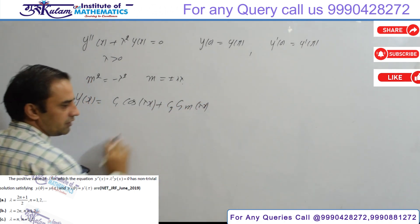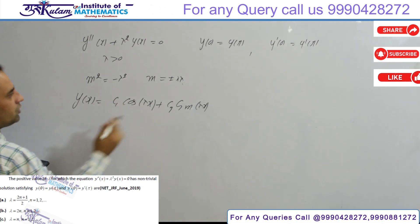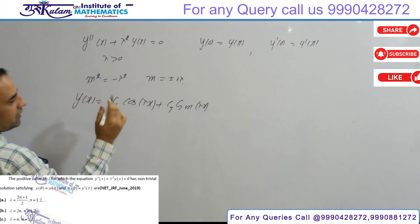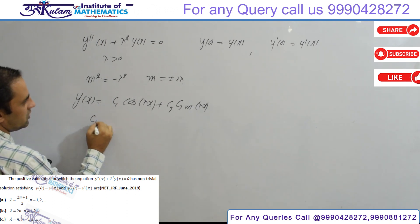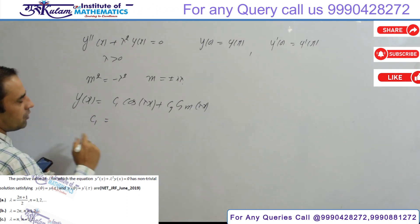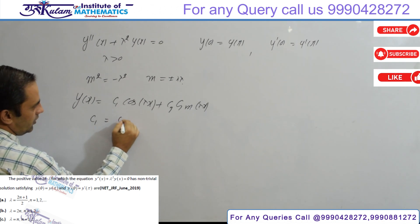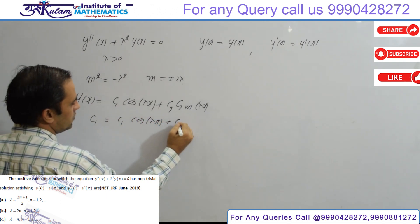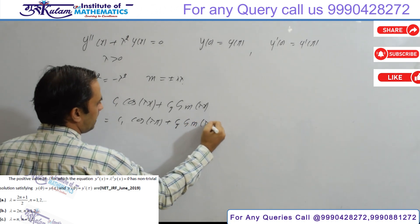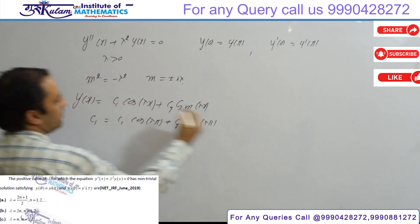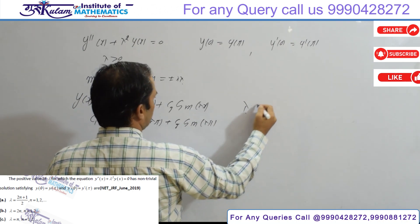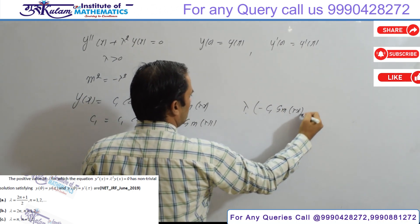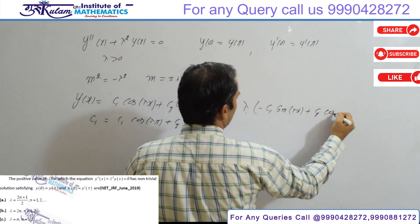This solution is non-trivial. Applying the condition y(0) = y(π): substituting y(0) and y(π) into the solution gives c₁cos(λπ) + c₂sin(λπ). For the derivative, y'(x) = λ(−c₁sin(λx) + c₂cos(λx)).